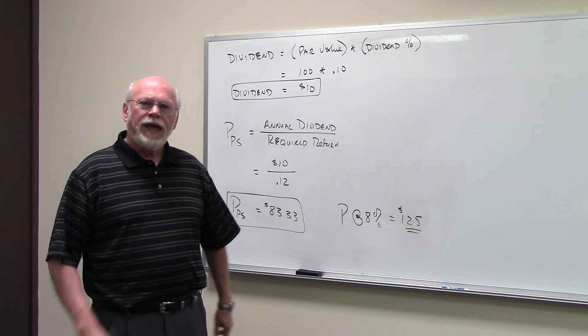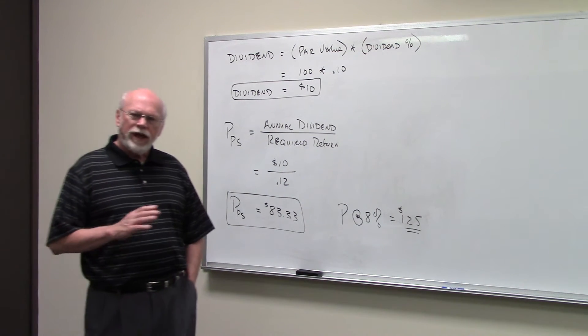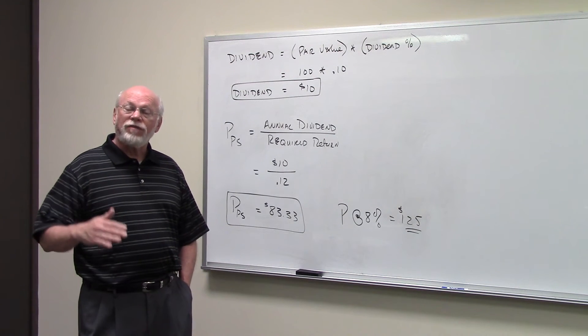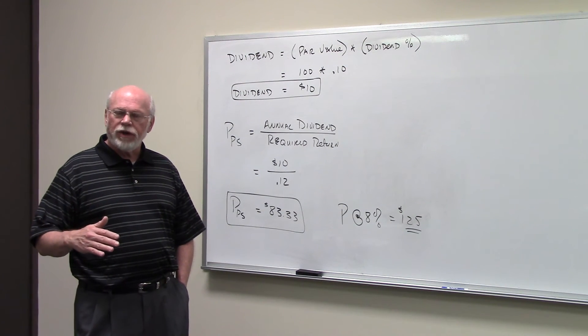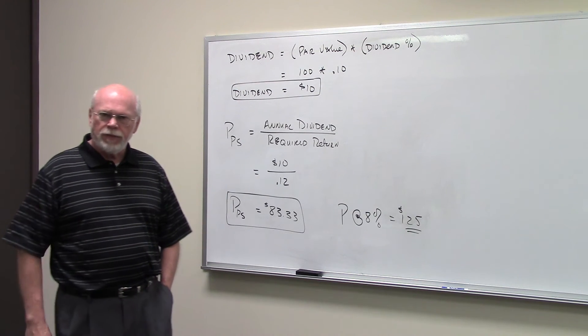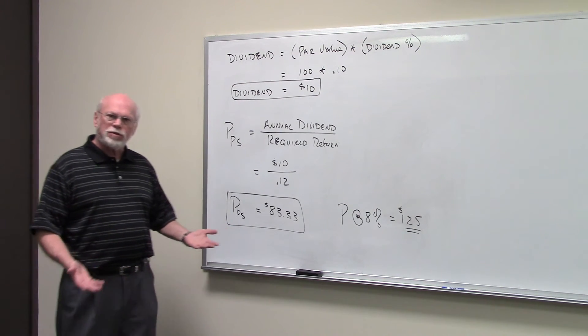When interest rates rise, the value of all assets go down - bond values go down, stocks go down, preferreds, commons - all assets go down in value. And that's what you see in this problem too.